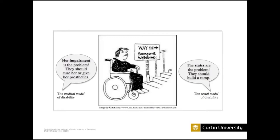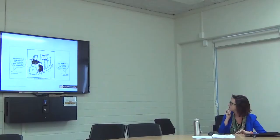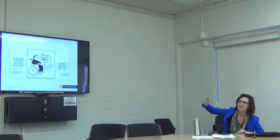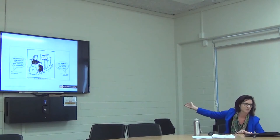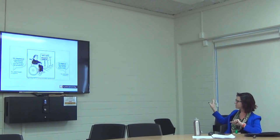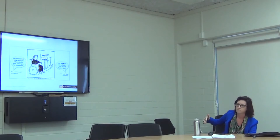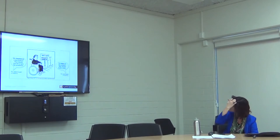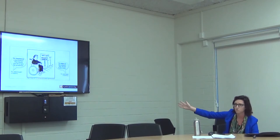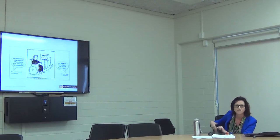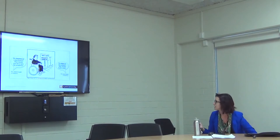I've got a cartoon I like to show every group I speak to about disability: a person in a wheelchair at the bottom of stairs, with a sign saying 'everyone's welcome to come in' — but obviously this person can't get up the stairs. The medical model says the problem is this person's inability to walk upstairs — cure them or give them prosthetics. Whereas the social model says: the stairs are the problem, let's build a ramp so everyone can truly be welcome.